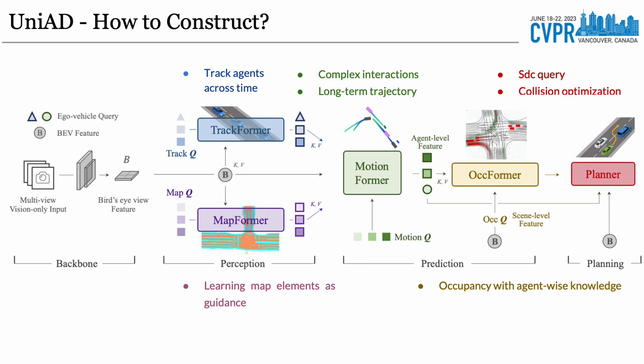Specifically, we process multi-camera images via a feature extractor, transforming them into bird's-eye view features on which the task modules are constructed. In the perception part, the TrackFormer tracks all dynamic agents across time, while the MapFormer segments the static map elements as guidance. For prediction, the MotionFormer accepts output features from the previous node, predicting the long-term trajectory of each agent. Then the output from MotionFormer feeds into the OccupancyFormer, which predicts future occupancy at a whole scene level.